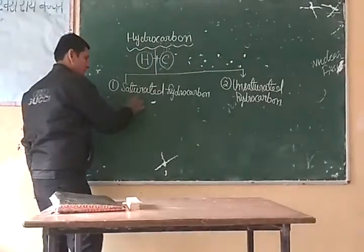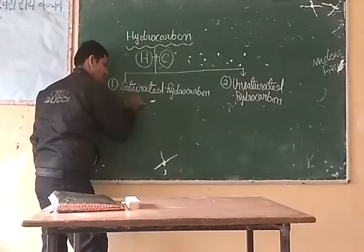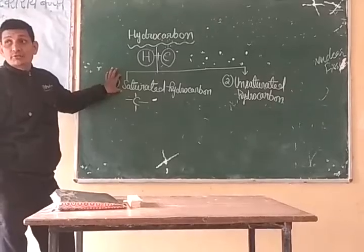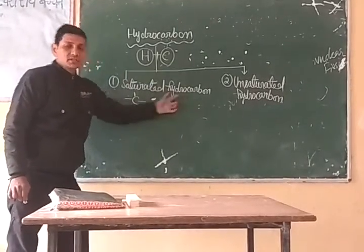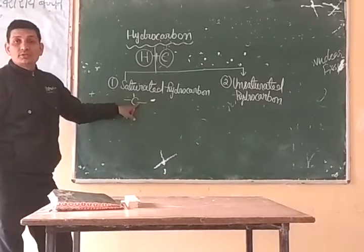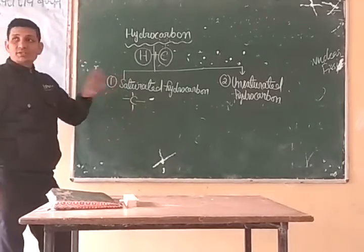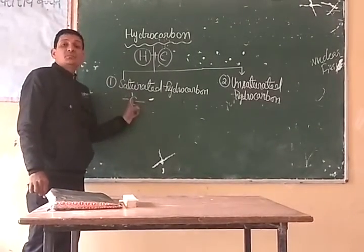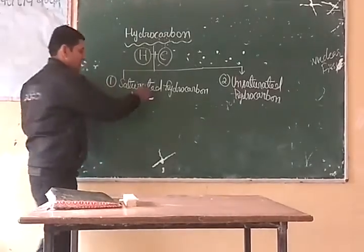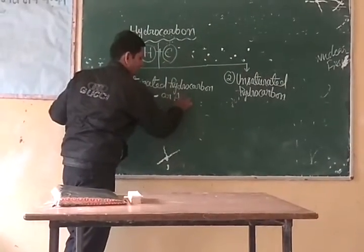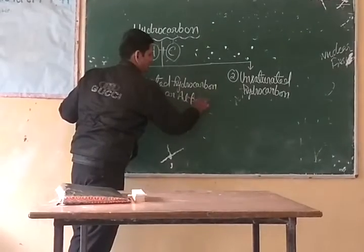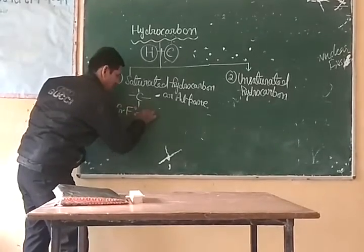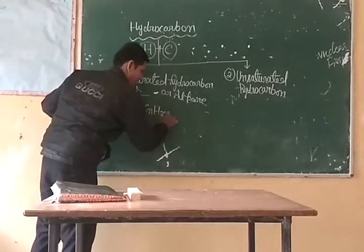Dear students, look here — saturated hydrocarbon. What is saturated hydrocarbon? Hydrocarbon in which carbon atoms are connected by single bond is called saturated hydrocarbon. It is also called alkane. Its general formula is CₙH₂ₙ₊₂.